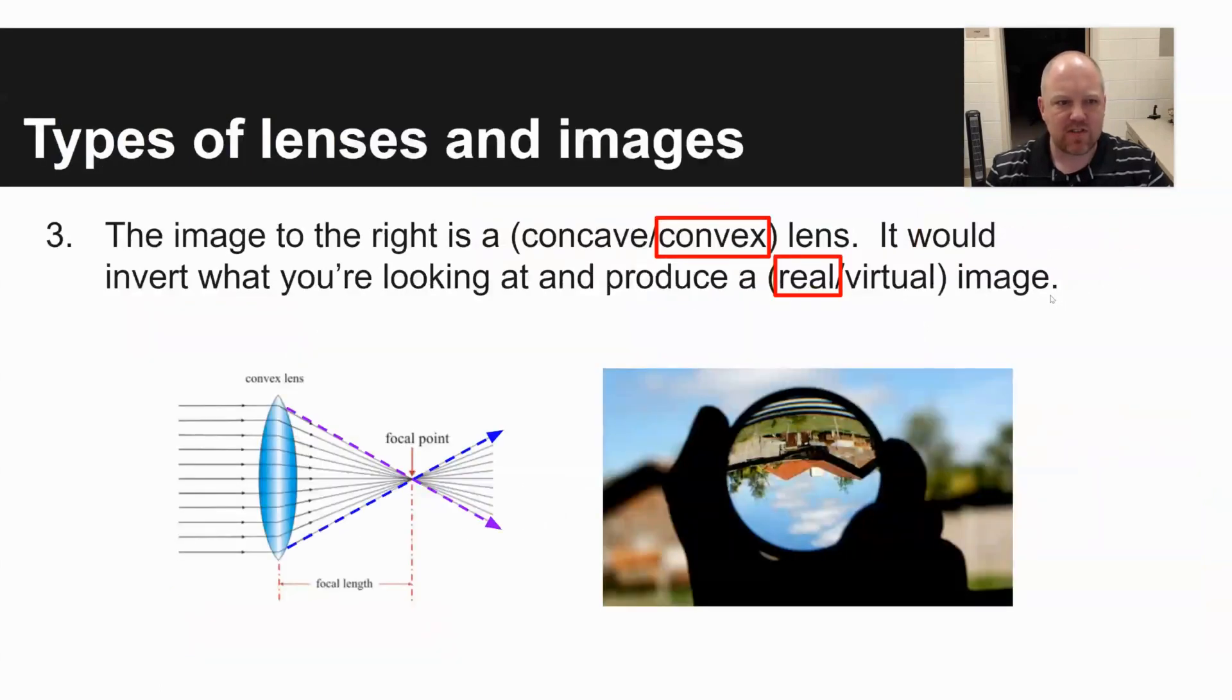Types of lenses and images is the third problem we took a look at here. It says the image to the right is a blank lens. It would invert what you're looking at and produce a blank image. And so this problem sort of demonstrates how a convex lens works. It's thickest in the center and it's going to invert. It's going to flip upside down your image.